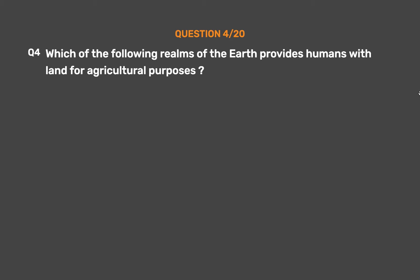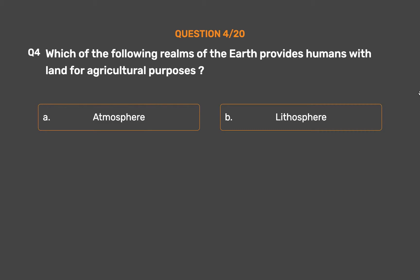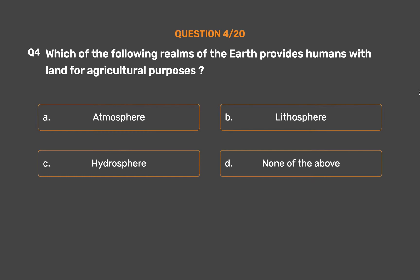Question No. 4. Which of the following realms of the earth provides humans with land for agricultural purposes? Option A: Atmosphere. Option B: Lithosphere. Option C: Hydrosphere. Option D: None of the above.